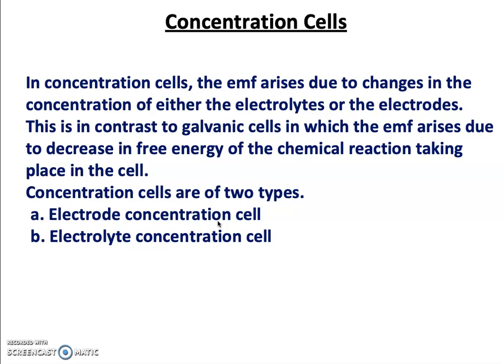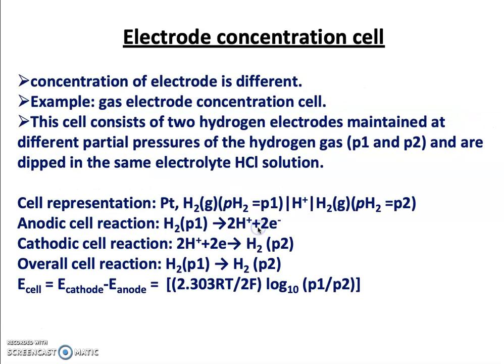Depending on whether the concentration of the electrolyte or the concentration of the electrode is in question, concentration cells are of two types: the electrode concentration cell and the electrolyte concentration cell. In the electrode concentration cell, the electrodes themselves have different concentrations.